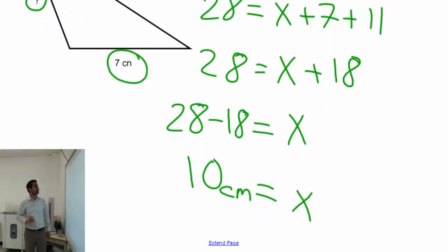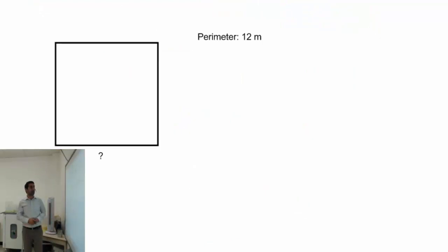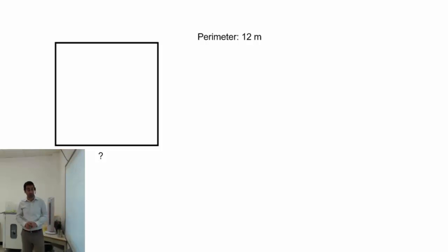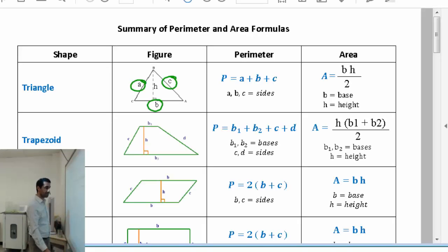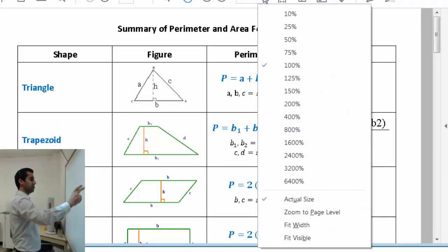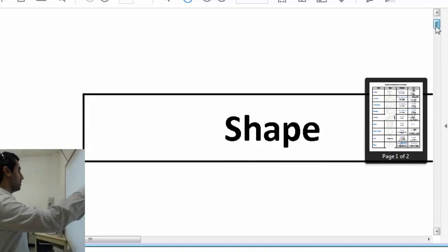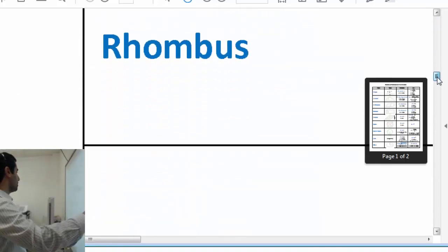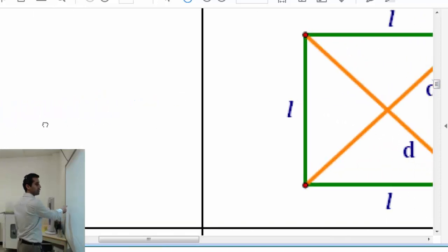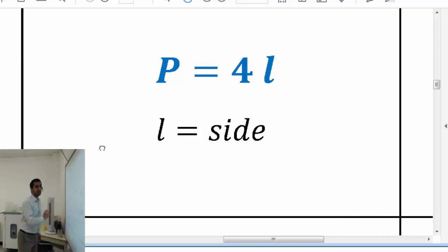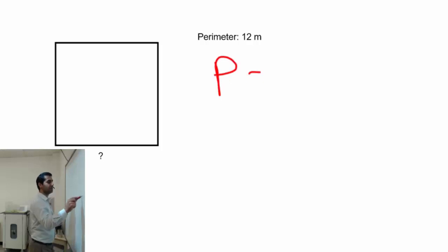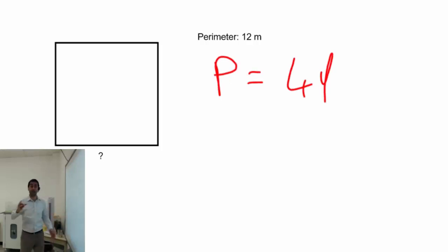Now let's do one more example — this time a square. For a square, we only need to know one side. First things first, the formula. The perimeter formula for a square from the formula handout is P equals 4l. Let's write that down: perimeter equals 4l.